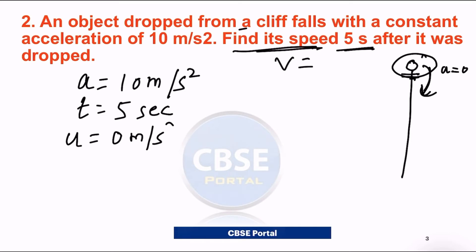Simply apply the first equation, v equals to u plus at. You need to find v, u is given as zero, a is 10 meter per second square, and t is 5. If we solve this, v will be 10 into 5, that is 50 meter per second.